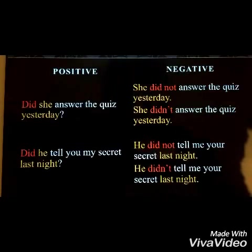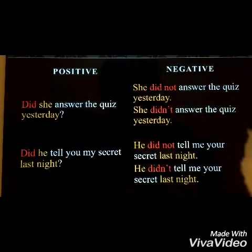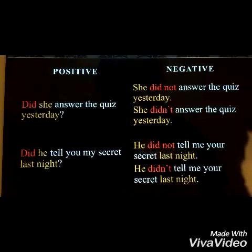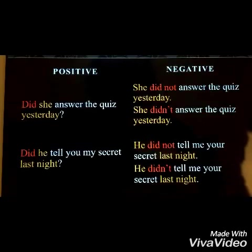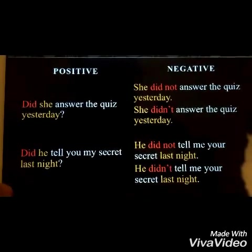For the next example, we have 'Did he tell you my secret last night?' In its negative form, you could say 'He did not tell me your secret last night.' In this sentence, we use did not because of our subject he and because the action happened last night. You could also say 'He didn't' as a shortcut for did not — 'He didn't tell me your secret last night.'